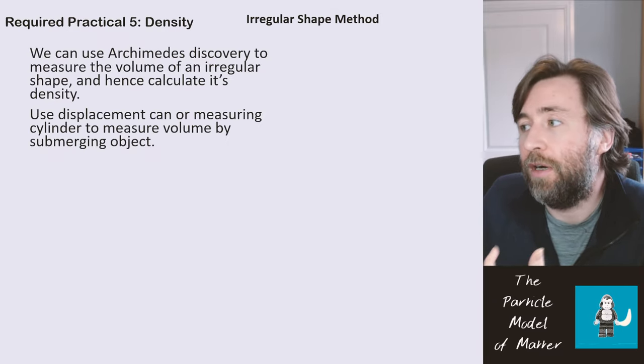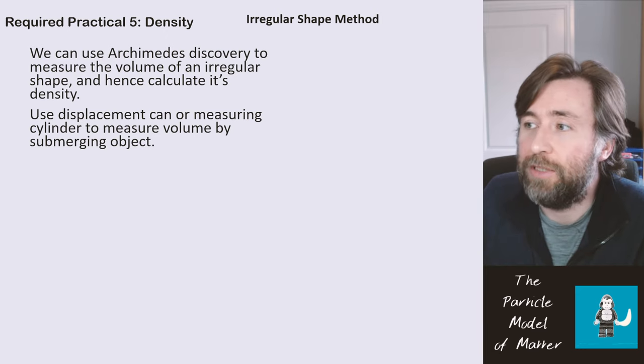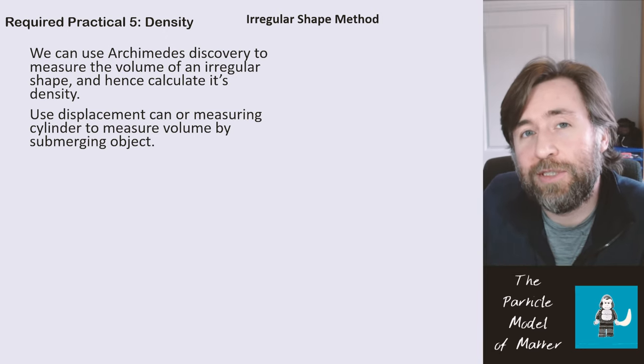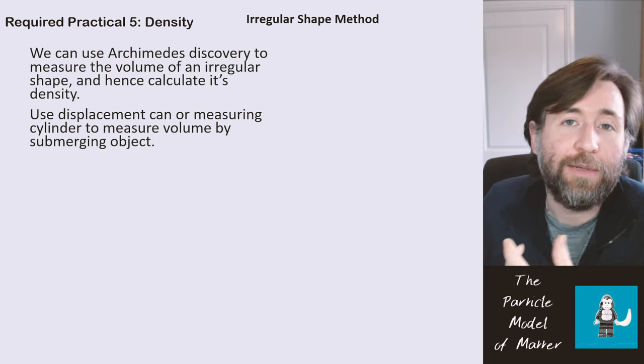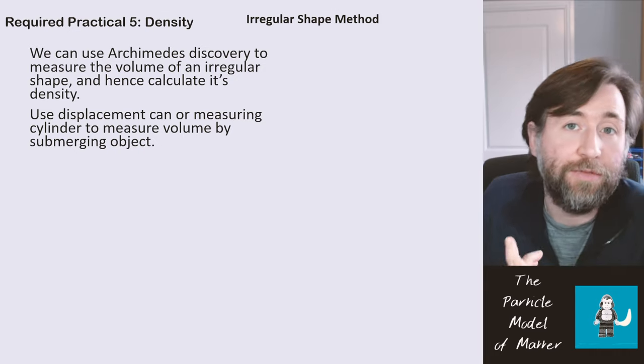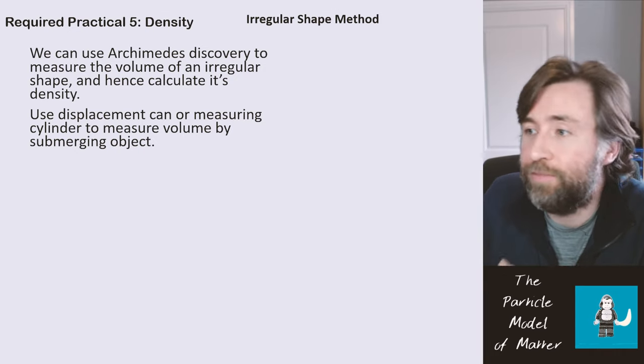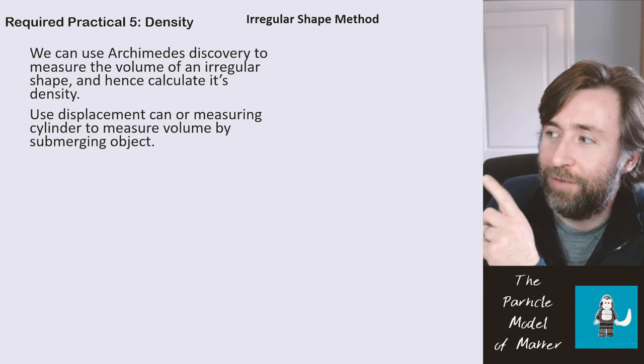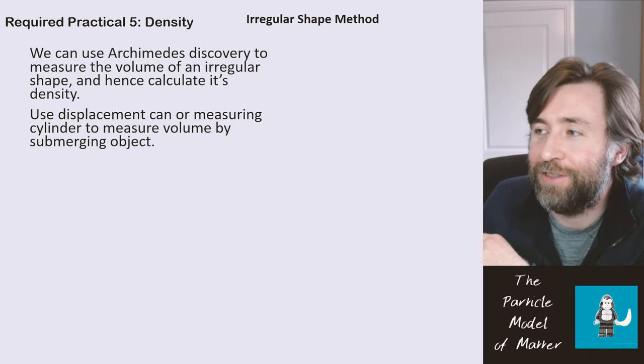And what we'd actually use is Archimedes' discovery, Archimedes' principle, we call it. Essentially, Archimedes' principle states that an object displaces the same volume of fluid as its own volume. And this was used by Archimedes to measure the volume of an irregular shape, a crown. We won't get into the story right now, but I do have a video where I discuss Archimedes' story.